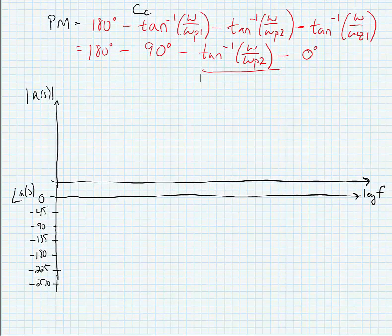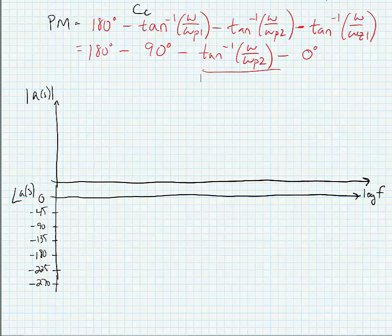Okay. Let's go ahead and plot the response. So our amplitude response would look something like this. We know that we're going to have a dominant pole, omega p1.